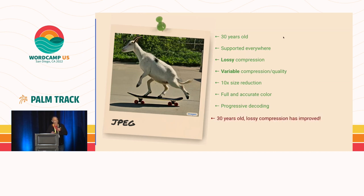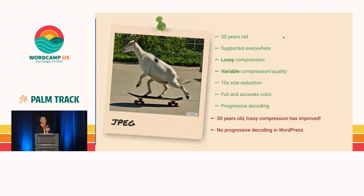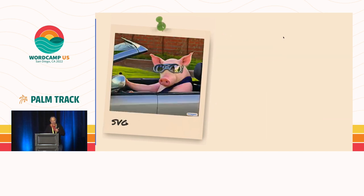Some downsides of JPEG: it's 30 years old, compression technology has improved significantly, and there's no progressive decoding in WordPress.